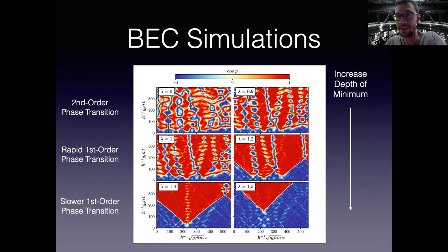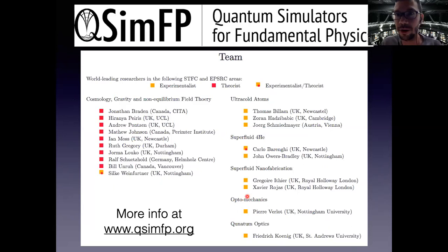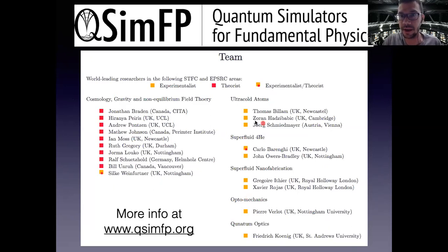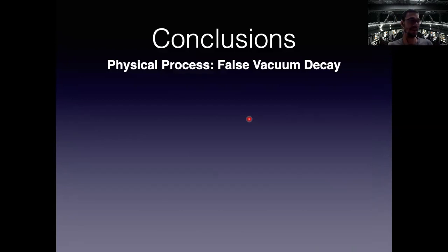Within the theoretical framework usually used to describe BECs, these systems do appear to describe false vacuum decay. That's exciting because when you build one of these systems, quantum mechanics is in there — no theoretical approximations needed. This experimental proposal is part of a larger consortium called Quantum Simulators for Fundamental Physics, an international group pursuing experimental signatures of quantum field theory. We're in discussions with Zoran Hadzibabic at Cambridge, an experimentalist in cold-atom BECs, and are hopeful an experiment will be built.